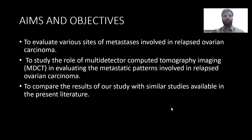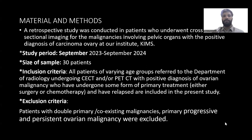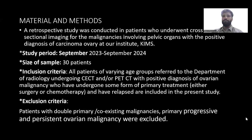The materials we used: we did a retrospective study from September 2023 to September 2024. The sample size was 30 patients. The inclusion criteria were all patients with a positive diagnosis of ovarian malignancy who had undergone any form of primary treatment — either surgery or chemotherapy — and had relapsed. The exclusion criteria was any coexisting malignancy or persistent ovarian malignancy; those were excluded from the study.